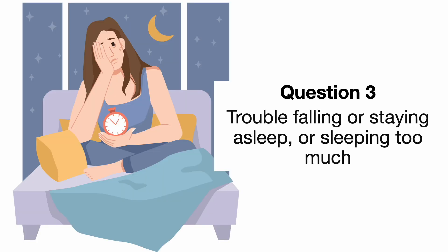Question 3 is about sleep problems. This question examines sleep disturbances, which are common in depression. It can manifest as insomnia — difficulty falling asleep or staying asleep — or hypersomnia, which is excessive sleeping or difficulty staying awake during the day.